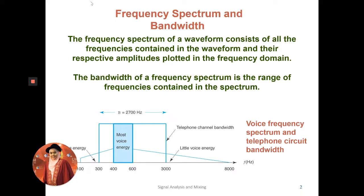Looking at this figure, this is an example of a voice frequency spectrum and telephone circuit bandwidth. The voice has a frequency spectrum around 300 to 3000 Hz. The bandwidth is 3000 minus 300 Hz, which equals 2700 Hz. Most voice energy is concentrated around 400 to 600 Hz, where the spectrum has its highest peak.